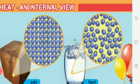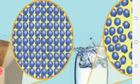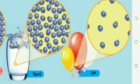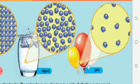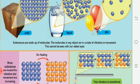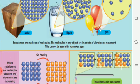Atoms and molecules are tightly packed in solids, a little loosely packed in liquids, and very random and free-flowing in gases. Substances are made up of molecules. The molecules in any object are in a state of vibration or movement. This cannot be seen with our naked eyes.